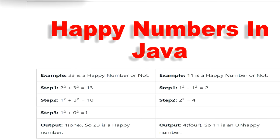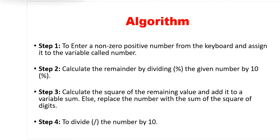This is the algorithm we need to follow to find happy numbers in Java. First, we take a positive non-zero input value from the user. Then we calculate the remainder by dividing by 10 using modulus. Next, we calculate the square of the remainder and add it to a variable called sum, replacing the number with the sum of squares of its digits.